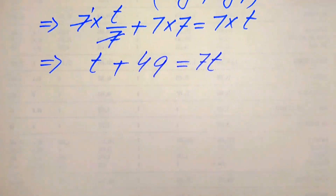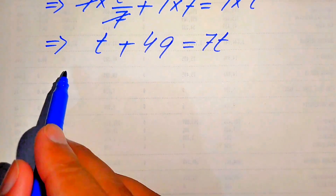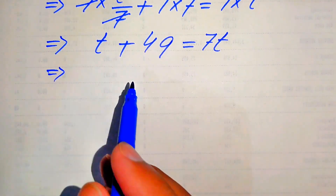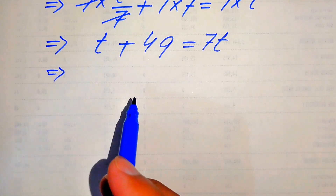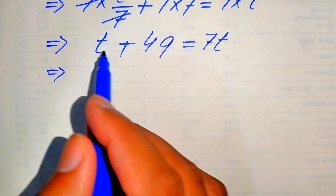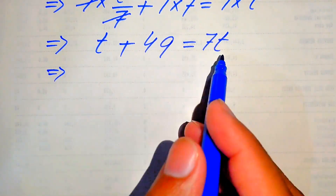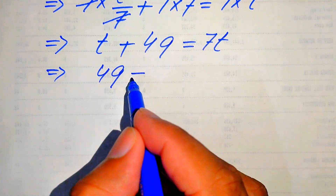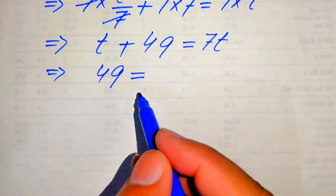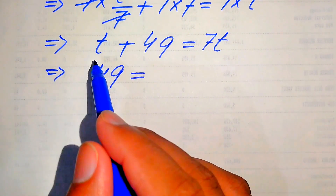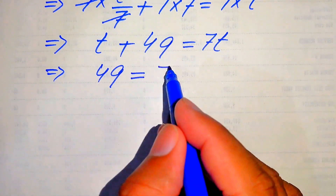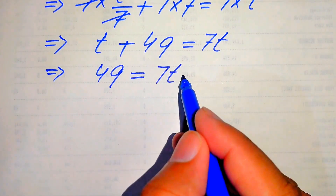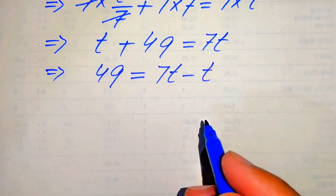In the next step we need to move the variable terms to the right hand side. We move this t to the right hand side and it will be written as 49 equals 7t minus t.